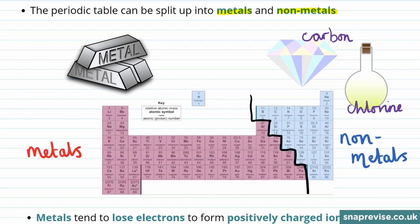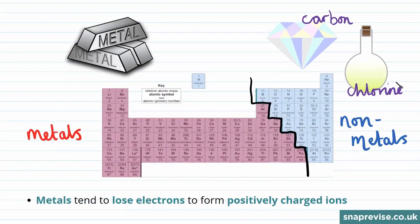Metals and non-metals tend to undergo characteristic reactions. By identifying where an element appears in the periodic table, you can predict how it's likely to react in order to try and gain a full outer shell.